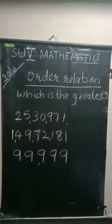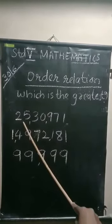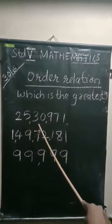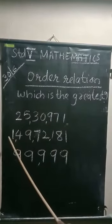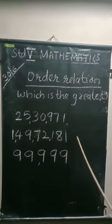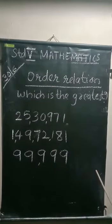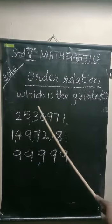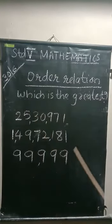Here, we have three numbers. First, 25,30,971. 1,49,72,181. 99,999. And we are asked to find which is the greatest of these three numbers.